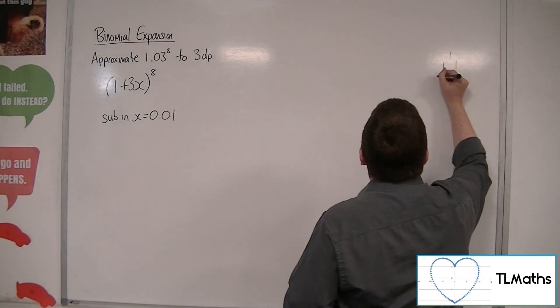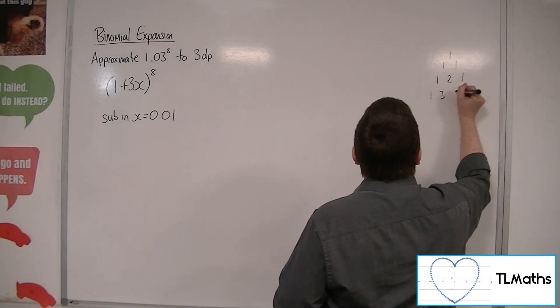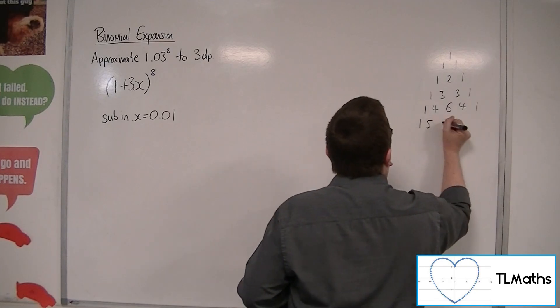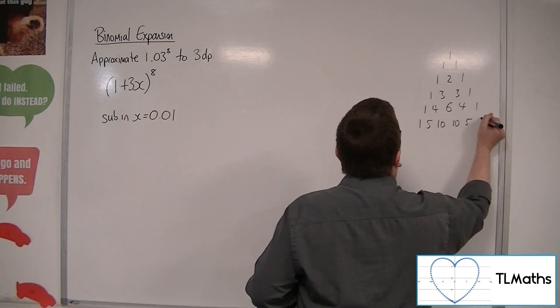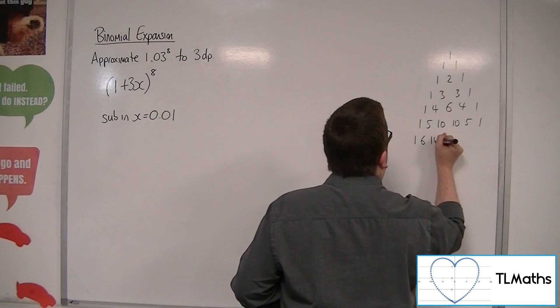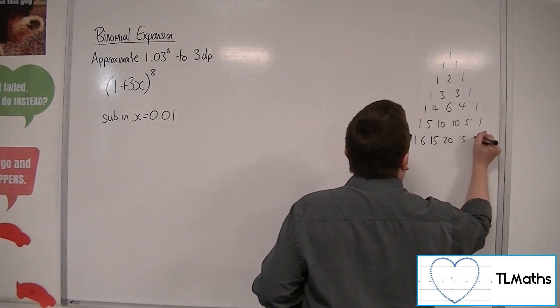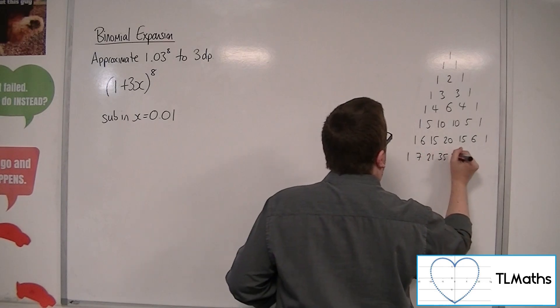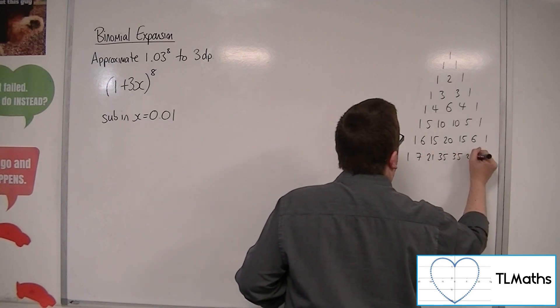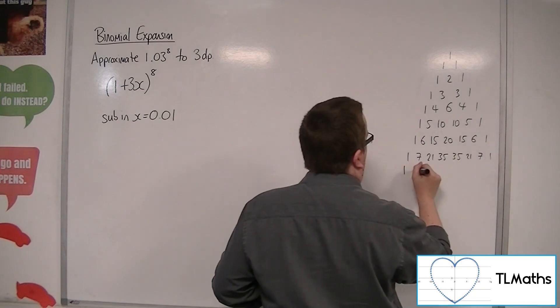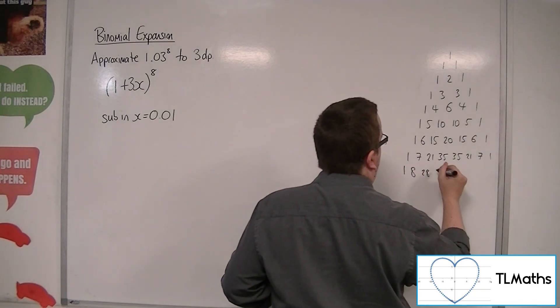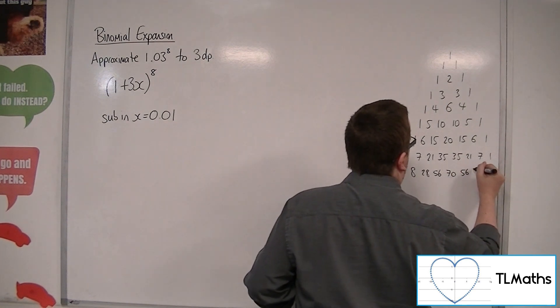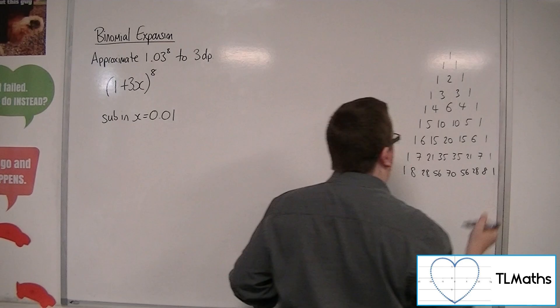So I'm going to use Pascal's triangle to help me out here. Okay, getting there. And one final row, I think. 28, 56, 70, 56, 28, 8 and 1. Okay.